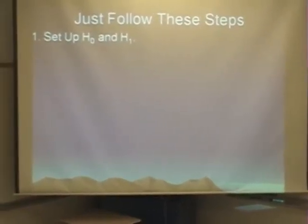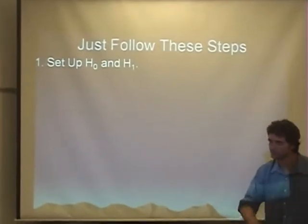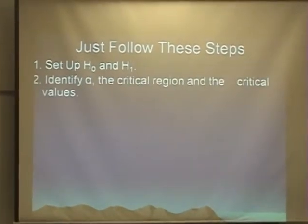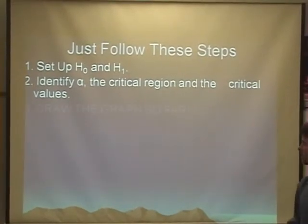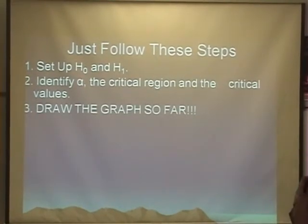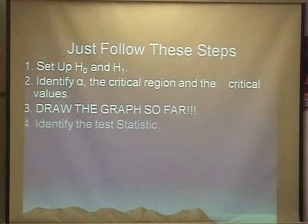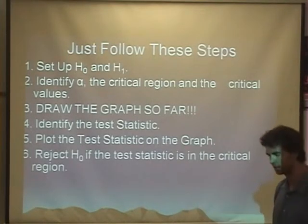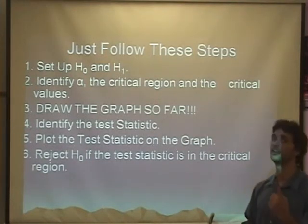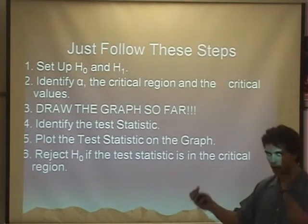First, we want to set up the null alternative hypothesis. Secondly, as usual, identify alpha, the critical region, and the critical values. Next up, draw the graph as it is so far. Follow it by identifying the test statistic. And then, of course, we would like to plot the test statistic on the graph.